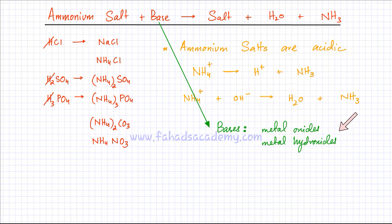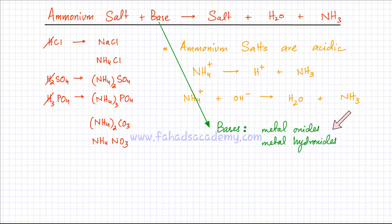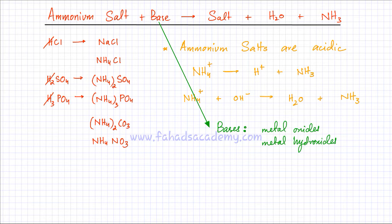Bases are metal oxides and metal hydroxides; they're capable of accepting H+1 ions. To sum it up: an ammonium salt is an acidic salt — it produces H+1 ions — whereas a base accepts H+1 ions, which is why you get a neutralization reaction producing salt, water, and ammonia gas.